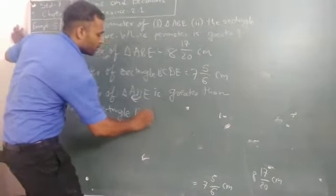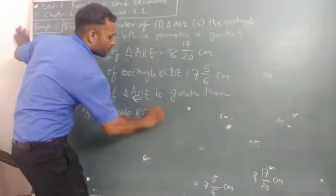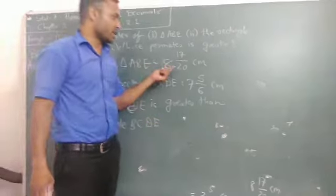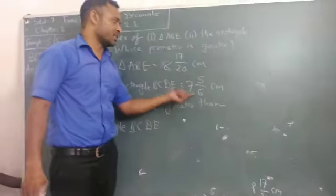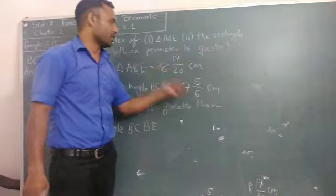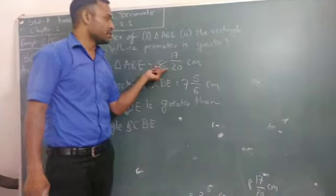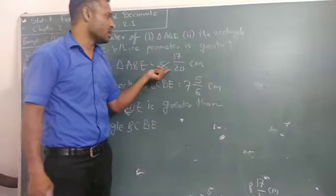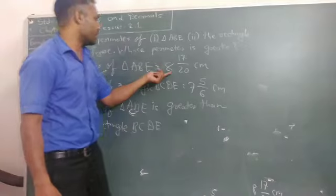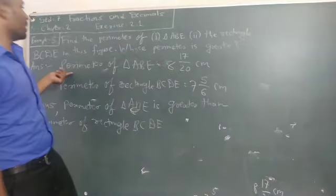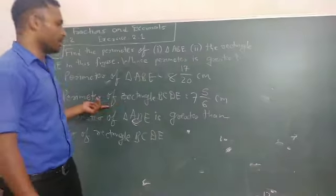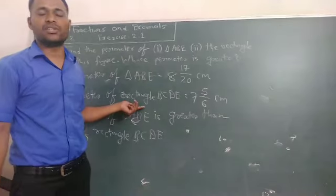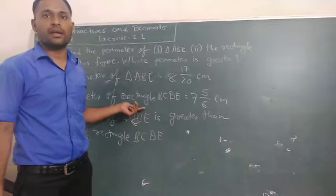Rectangle BCDE. You must look at the first digit of the mixed fraction. This is 8 for the triangle and 7 for the rectangle. The bigger is 8, so the perimeter of triangle ABE is greater than the perimeter of rectangle BCDE.